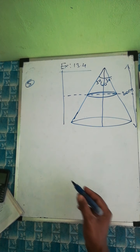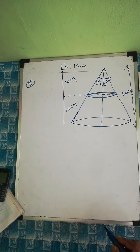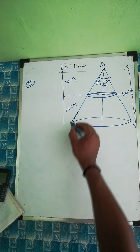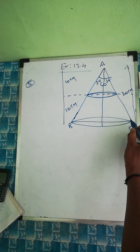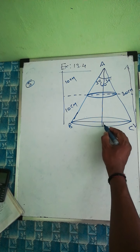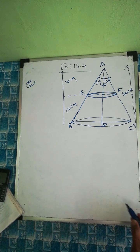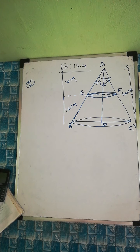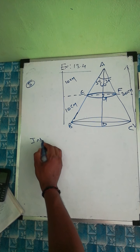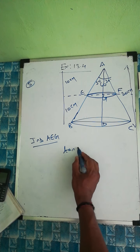The total height is 20, so each part is 10. Now in triangle, we'll label the points: triangle ABC, triangle DEF, and point G. We take triangle AEG first.